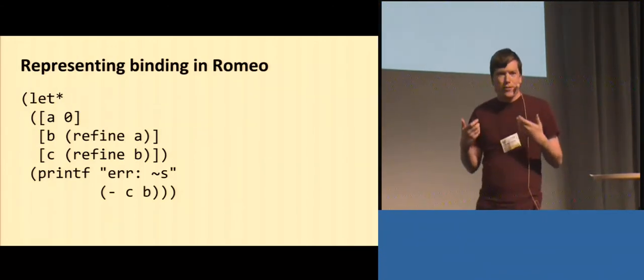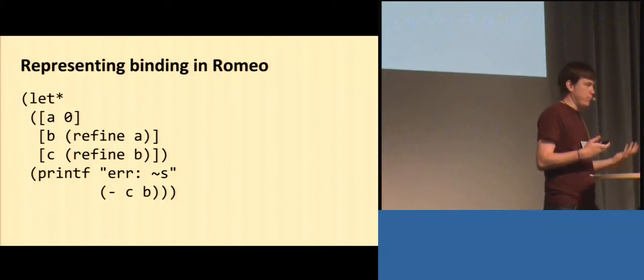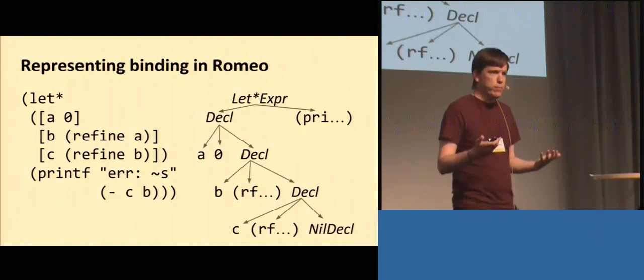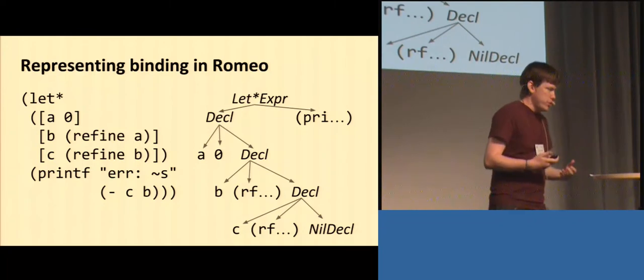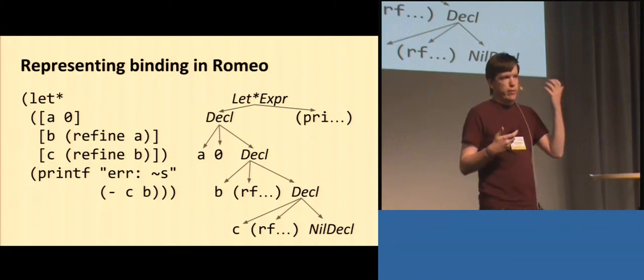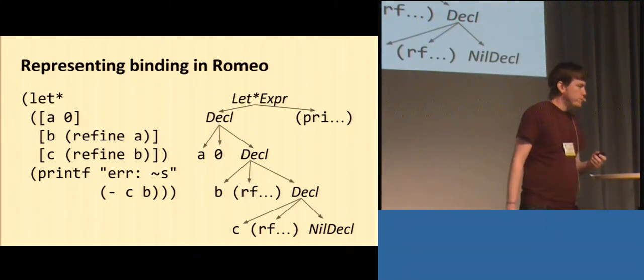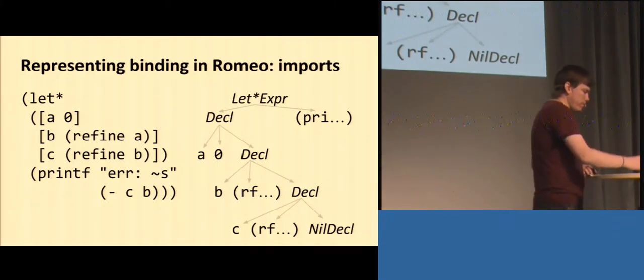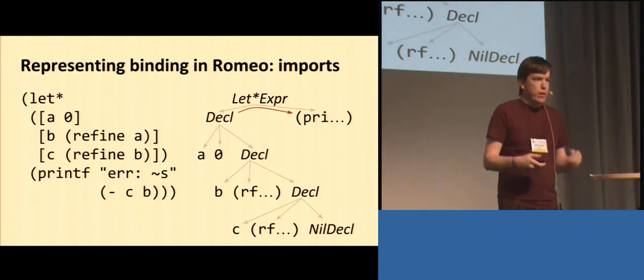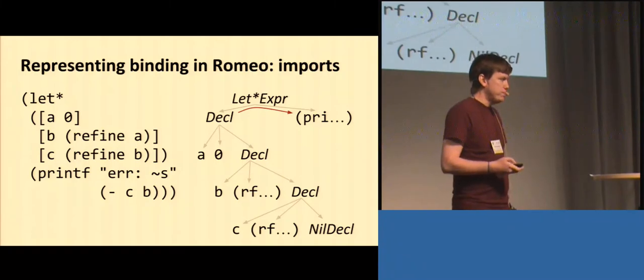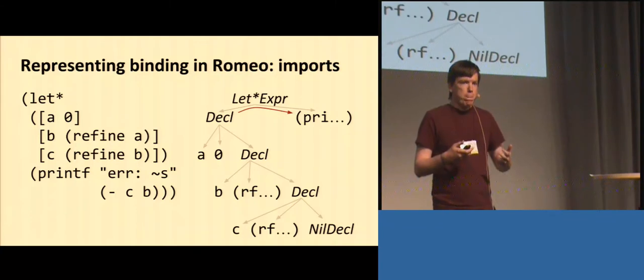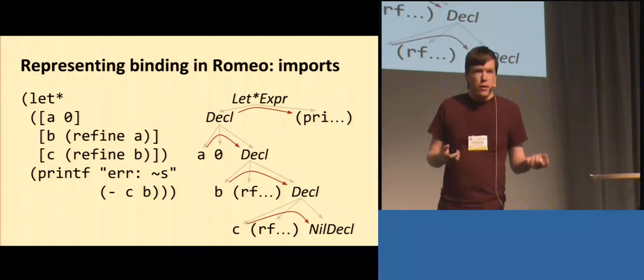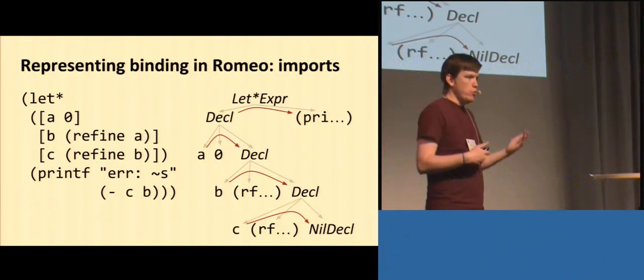So the first step is we need to find a way to actually represent binding in Romeo. Here's the left star example again. First thing we should do is parse it. So our parse tree shows that left star is just a pair, and all of the structure is inside the declarations. The declarations we're saying in this parse tree are triples. They've got an atom, an expression, and either the next declaration or the end of the line. So that's great. Let's start by talking about how names get bound in these new scopes in the first place. This feature is called imports. And we're going to say that in the left star, the decal, the declaration, is imported by the expression. This means that the declaration is going to provide some names for the expression, and that's how A, B, and C get bound there. Then in each of the declarations, the name that that declaration binds is going to be bound inside the next declaration. So that's how the names move on down the line. Simple.